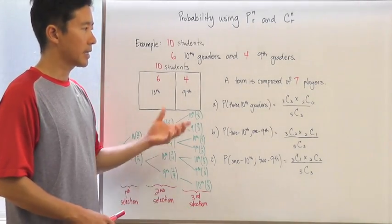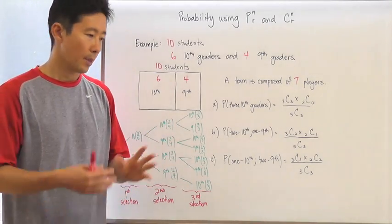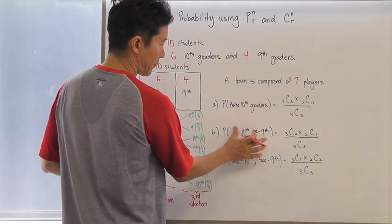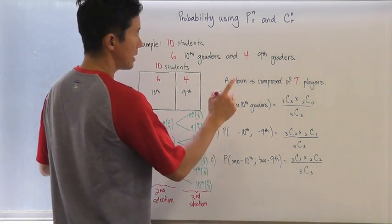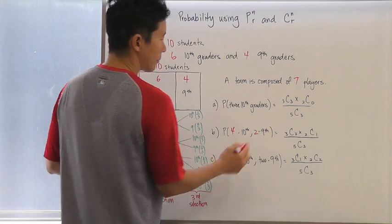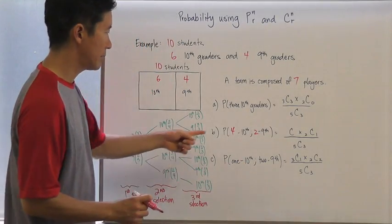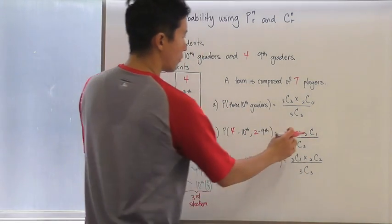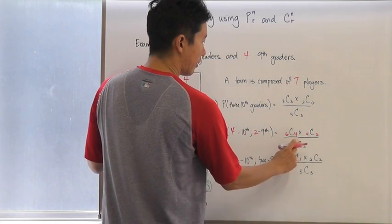With seven selections, the tree method becomes much more difficult to calculate. But with combinatorics, if we want the probability of a team of seven with four tenth graders and three ninth graders, we just say: from six tenth graders choose four — C(6,4) — and from the four ninth graders choose three — C(4,3).